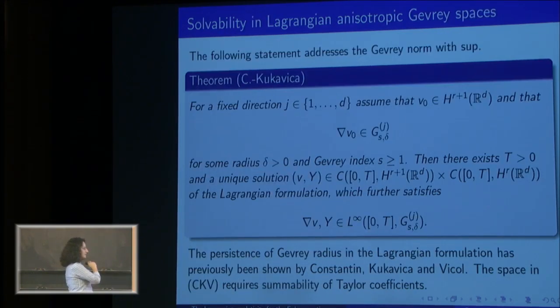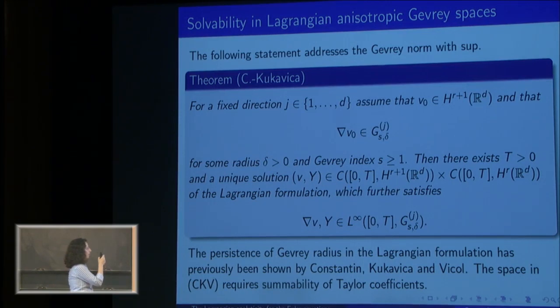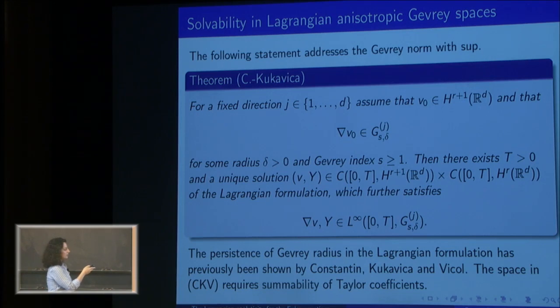With this setting in mind, my advisor and I proved that if we start with an initial data which belongs to a certain Sobolev class with index r plus one, where r is larger than d/2 so that we have an algebra, and if we have the gradient of the initial data belonging to a certain Gevrey class with index s and radius δ, then the unique Sobolev solution stays in the same Gevrey class for a positive amount of time. This gives us persistence of the radius δ.